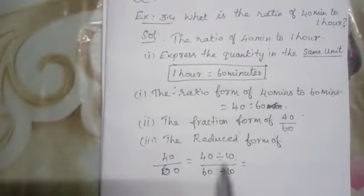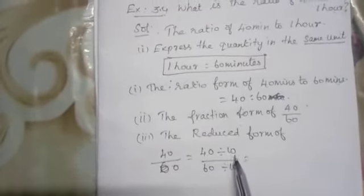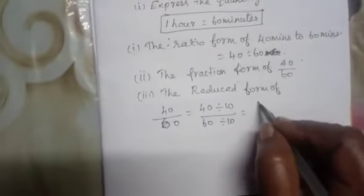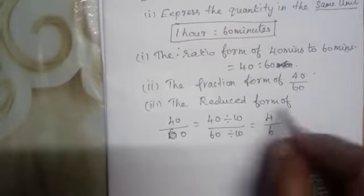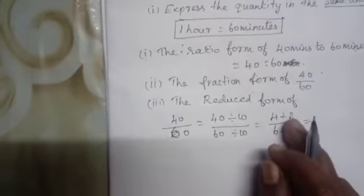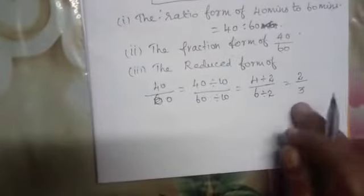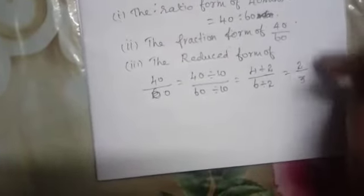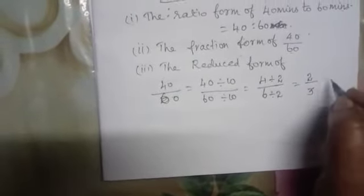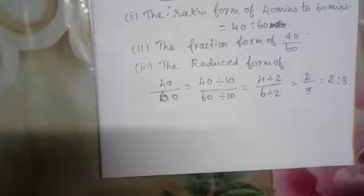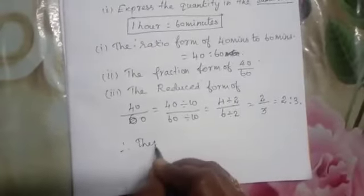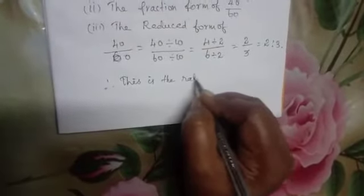Now write the fraction form: 40 divided by 60. Using the 10 times table, cancel to get 4 divided by 6. Then divide both by 2: 4 divided by 2 is 2, and 6 divided by 2 is 3. So the ratio in simplest form is 2 is to 3.